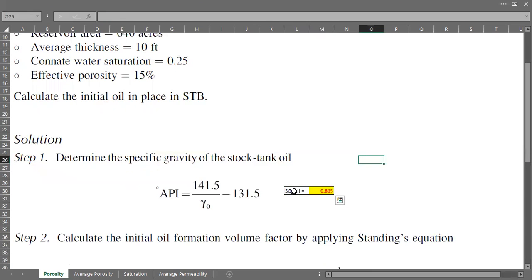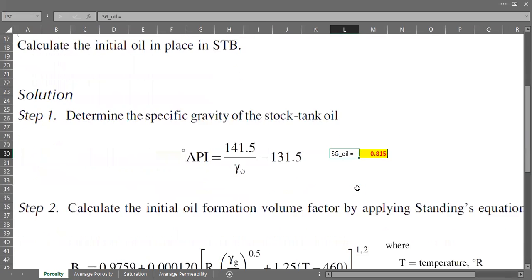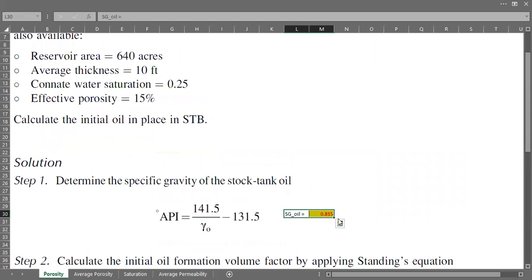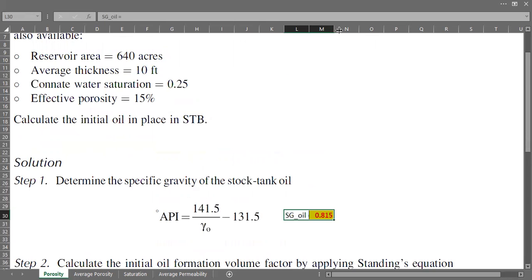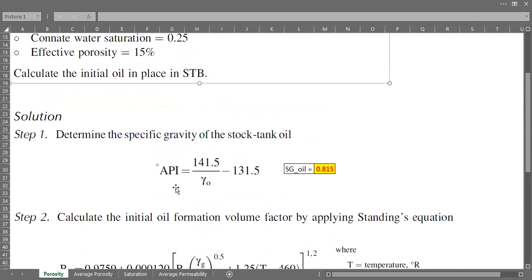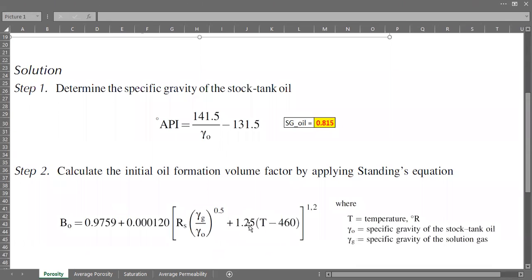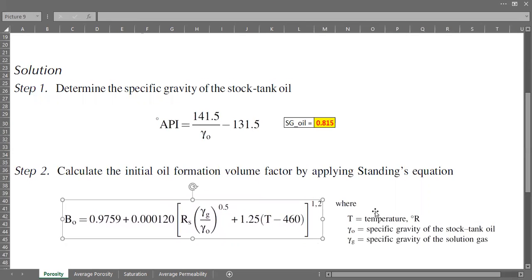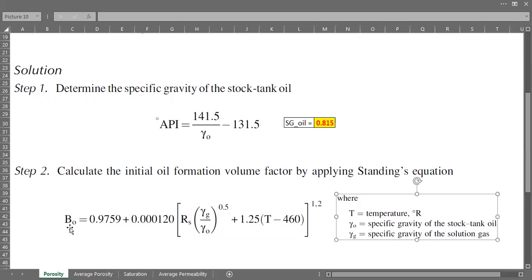So the specific gravity of the oil is 0.815. And the next one is we need to calculate the initial oil formation volume factor Bo, and one of the correlations that we can use, a quite simple one, is Standing's correlation or Standing's equation. I prepare the correlation here.